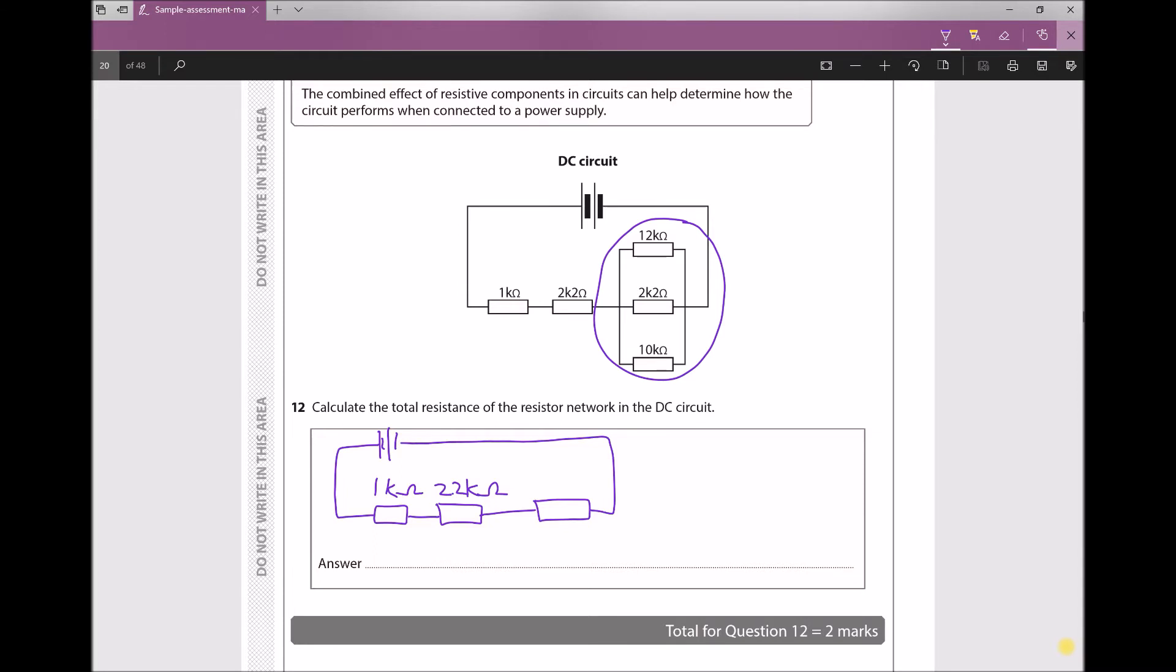Now the way that we determine the single resistance that will replace those is using the following equation: we have 1 over RT, the total resistance, equals 1 over R1 plus 1 over R2 plus 1 over R3. That's the formula that we use to determine the single resistance for resistors in parallel. So let's add some numbers in there.